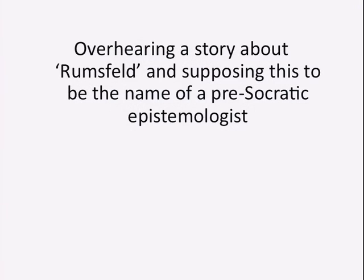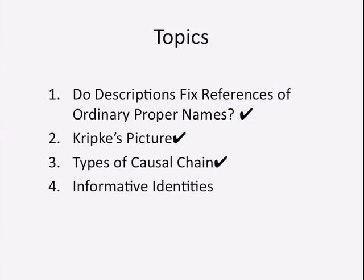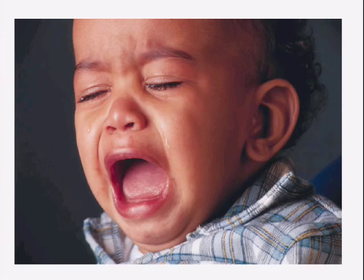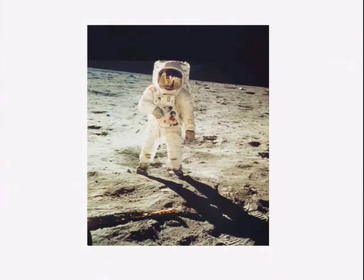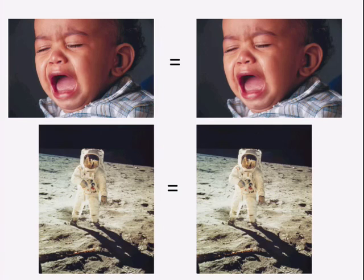Finally, consider what happens to informative identities in this picture, taking photographs as our model for reference. I'm going to show you a picture — perhaps a little harrowing. Here is a photograph of a particular individual. Now: is this the same person as this other photograph? You don't know. Would it be informative to be told they are the same person? Yes, that would be an informative identity. We're not talking about match here — we're talking about who generated the photograph. And even so, you can see it's going to be an informative identity.